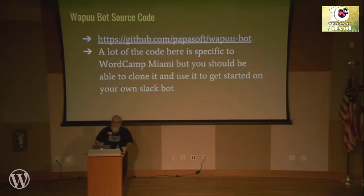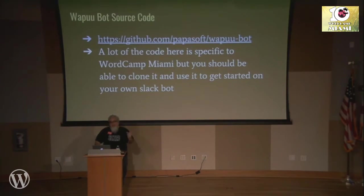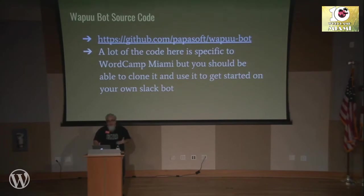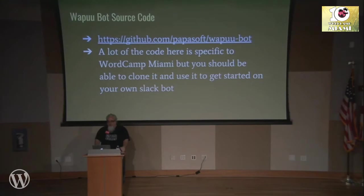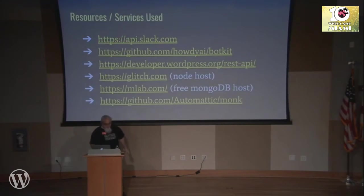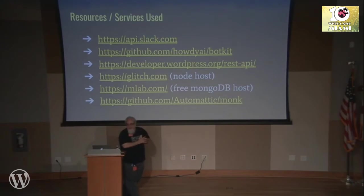All the source code for what I did is in this repository. I didn't write a whole lot of code — all I really had to do was take that Bot Kit starter app and put in the definitions for the different controllers and my data for what messages to use. You could take this and try it out for another WordCamp. There are a lot of things in it that are special just for WordCamp Miami, but hopefully it could be a starter. Here are some links to the resources and services I used: Slack, Bot Kit, the WordPress REST API.